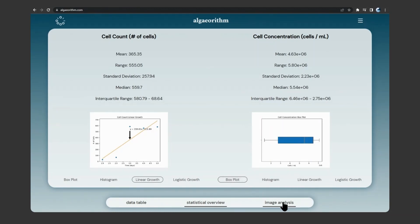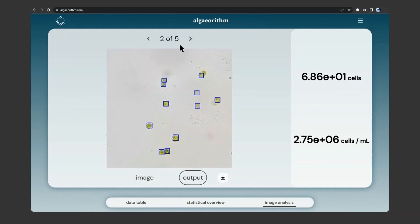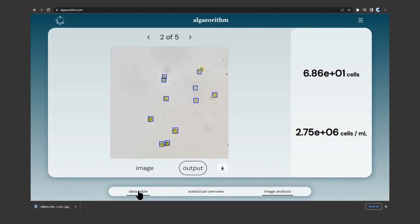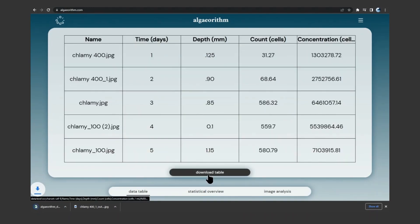The tabs at the bottom allow users to navigate between different representations of their data, including a visual overview and statistical analysis, and they can also access raw data in the form of a CSV file.